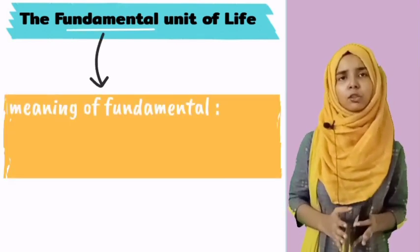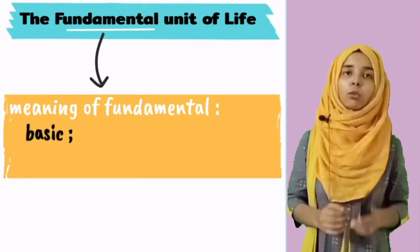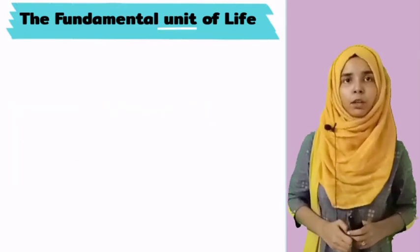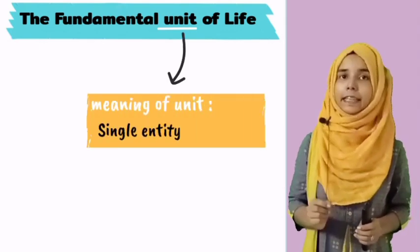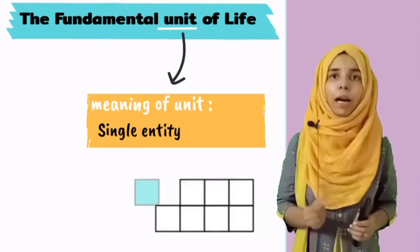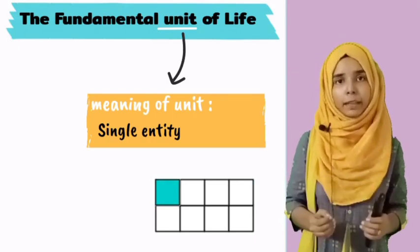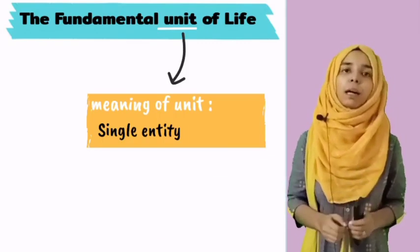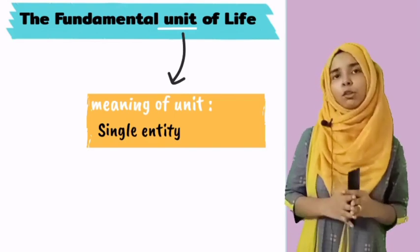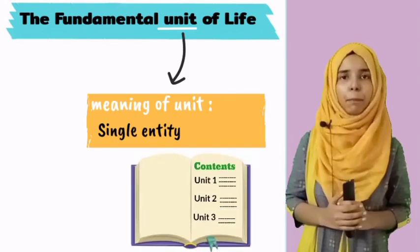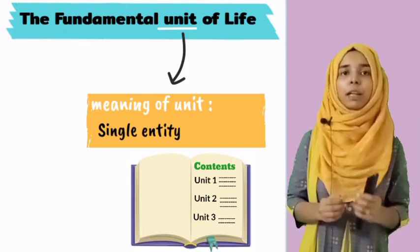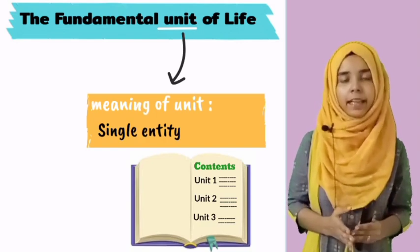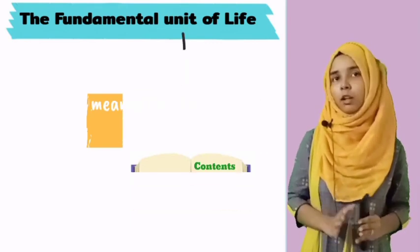Fundamental means something that is primary, and from which everything else develops. The second word is 'unit.' Unit refers to a single entity of anything — a single part that is complete on its own, although it can be part of something larger. For example, if we have a science textbook with three units — physics, chemistry, and biology — all three together form the book, but each is complete in itself. That is what we call a unit.